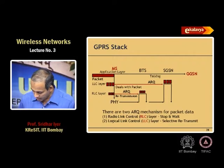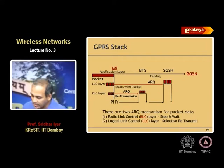What ARQ mechanism is used? At the RLC layer: stop-and-wait. At the LLC layer: selective retransmit. At the LLC layer, if you have received most packets, you do not want go-back-N — you just want to say send me that one packet I did not get. That is why selective retransmit is used at the LLC layer.